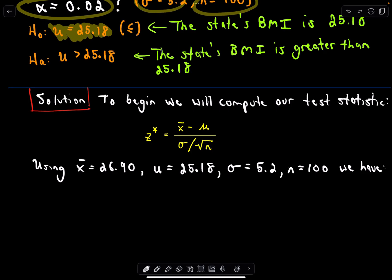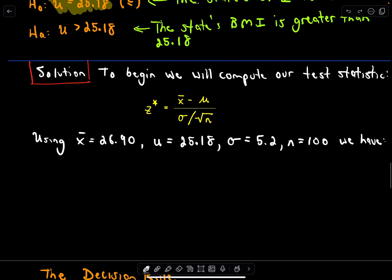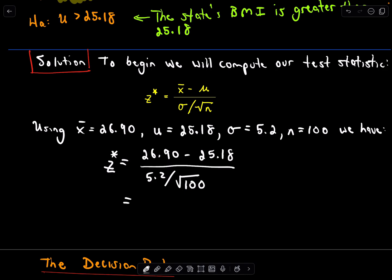All we have to do in this case is compute our test statistic using our given information. This is really the only work. Our test statistic z-star is going to be equal to our computed average, which was 26.90, minus our previous average, 25.18. We divide that by the known standard deviation, which is 5.2, and we divide that by the square root of 100, which was our sample size. I got this to be equal to roughly 3.308. That's going to be our test statistic.